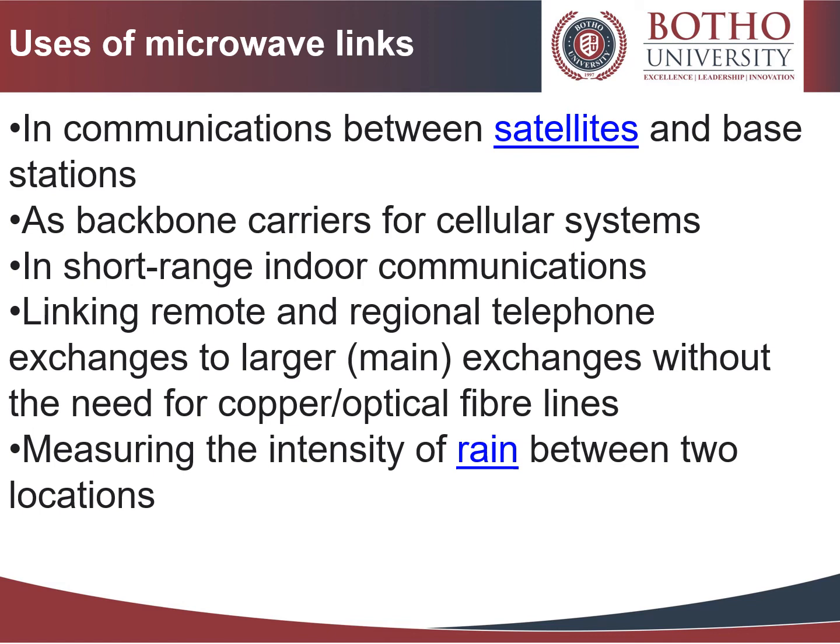There are also numerous uses for microwave links. These include communications between satellites and base stations, acting as backbone carriers for cellular systems, short-range indoor communications, linking remote and regional telephone exchanges to larger main exchanges without the need for copper or optical fiber lines, and measuring the intensity of rain between two locations.